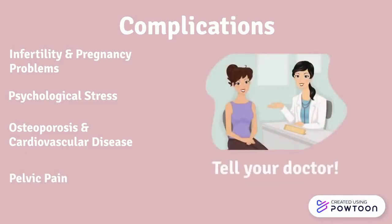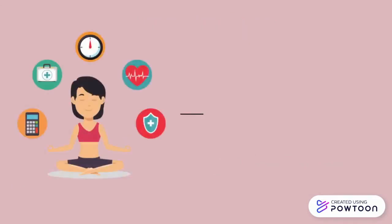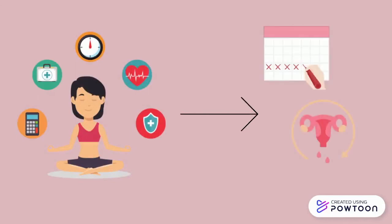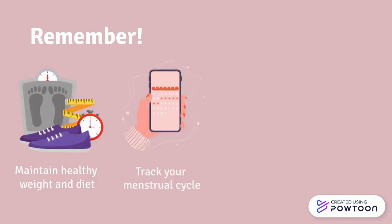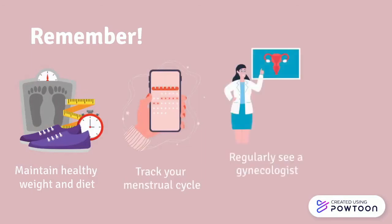It is clear that taking care of your health is crucial for maintaining a regular and healthy menstrual cycle and preventing long-term complications. So remember: maintain a healthy weight and eat a healthy diet, be aware of your menstrual cycle so you know if you miss a period, regularly see a gynecologist and have a pelvic exam, and get regular and adequate sleep. Thanks for watching.